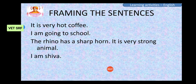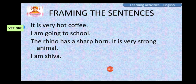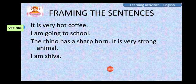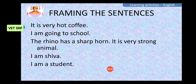'I am Shiva.' I is a pronoun. Am is a verb. Shiva is a noun. 'I am a student.' I is a pronoun. Am is a verb. A is an article. Student is a common noun.